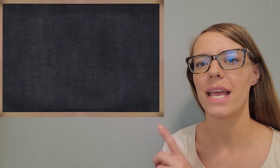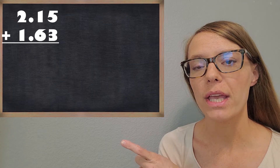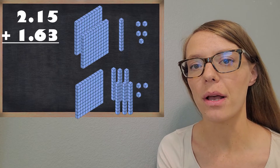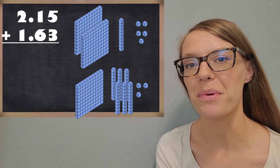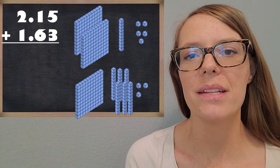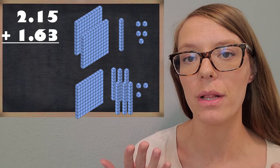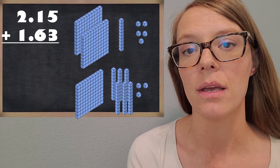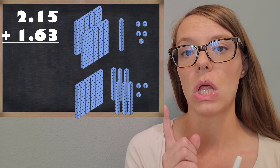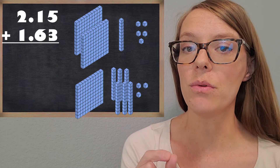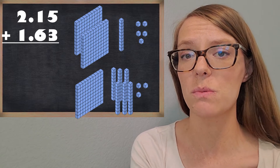Alright, so the first thing we're going to do is take a look at an example problem. And we're going to try solving it first with base 10 blocks. So let's get those ready and see if we can add them up. Now we're using these base 10 blocks a little bit differently than you have in the past. So in the past, that flat would be 100, the long would be 10, and the unit would be 1.